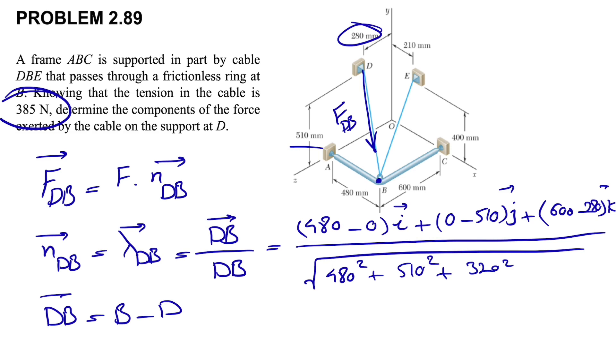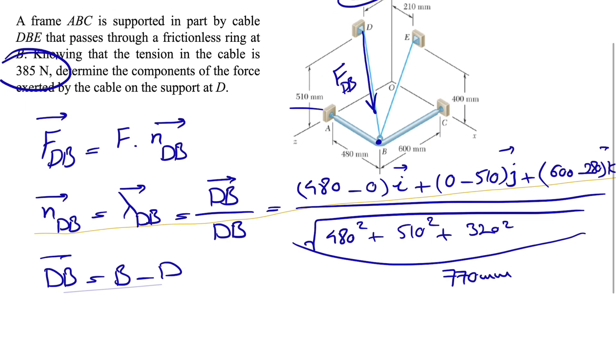For the magnitude we have the square root of the i component squared, which is 480 squared, plus 510 squared, plus 600 minus 280, which is 320 squared. That gives us 770 millimeters for the unit vector.